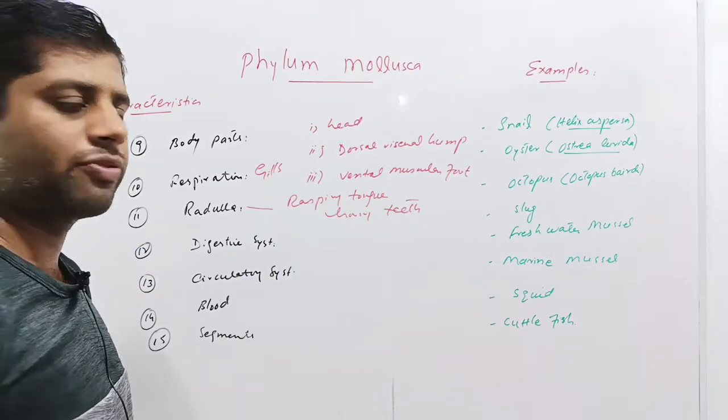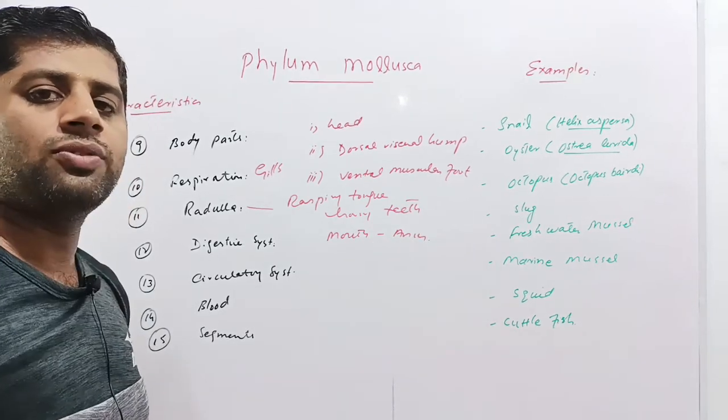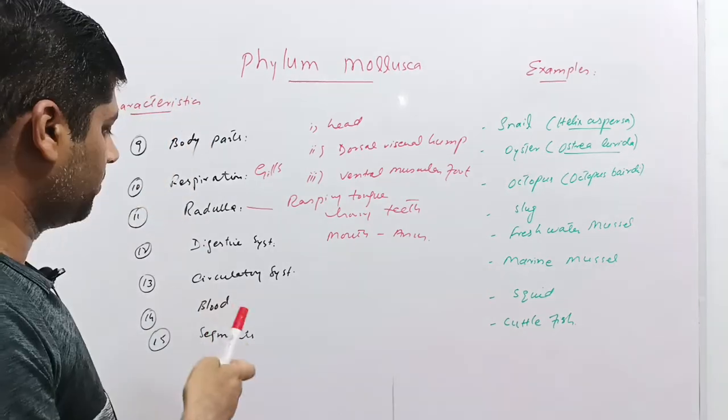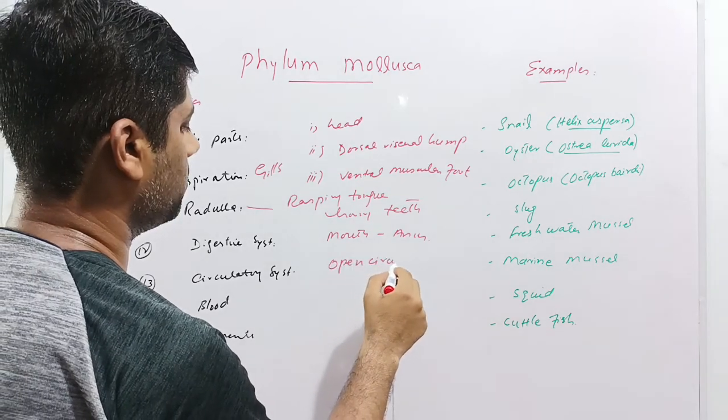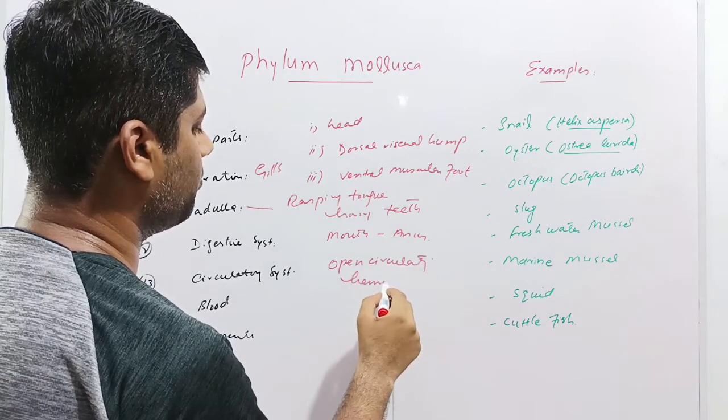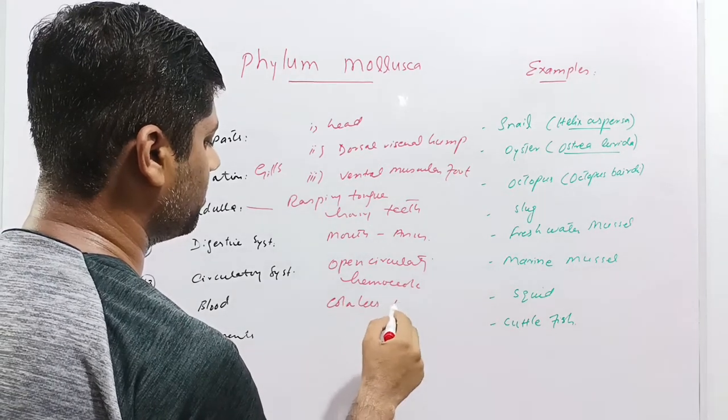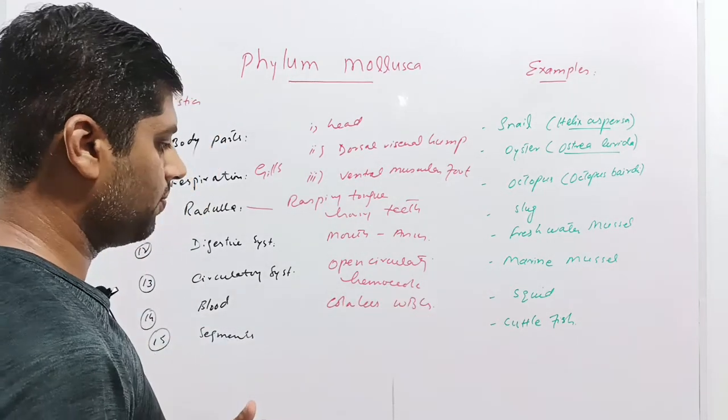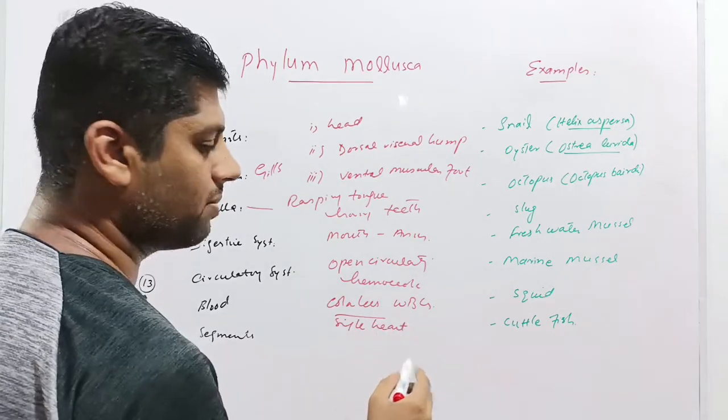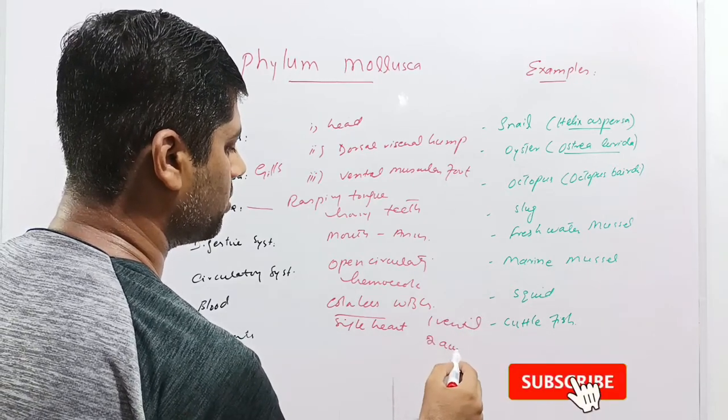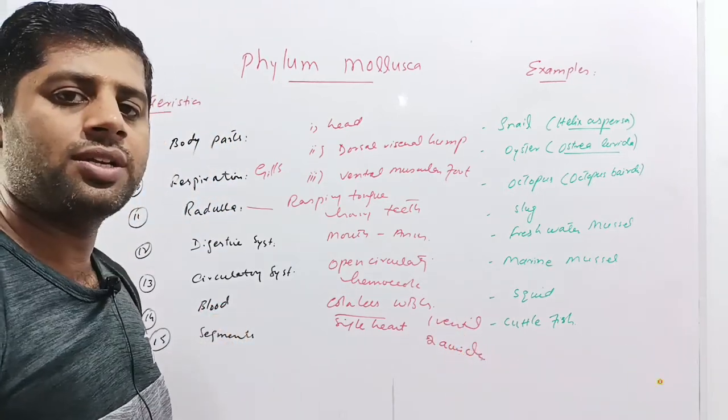Next is the digestive system. These have complete digestive system starting at the mouth and ending at the anus. Both mouth and anus are present, and digestive glands and digestive enzymes are also present for the digestion of food. Next is the circulatory system. These animals have open circulatory system having hemocoel. The body fluid responsible for transportation is called hemocoel. It is colorless fluid containing white blood cells. The hemoglobin pigment is absent. A single heart having three chambers: one ventricle and two auricles. The blood is colorless containing white blood cells.